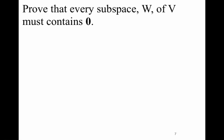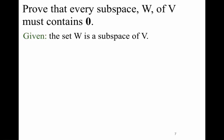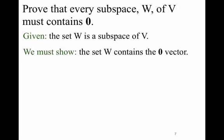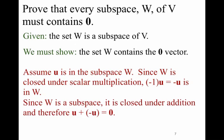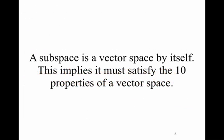We could prove that every subspace W of V must contain the zero vector. We're given that W is a subspace of V — a non-empty subset closed under addition and closed under scalar multiplication. We must show that W contains a zero vector. Assume U is in the subspace W. Since W is closed under scalar multiplication, minus 1 times U equals minus U is in W as well. Since W is also closed under addition, U plus minus U — one of our axioms — equals the zero vector. Therefore, if it's closed under addition and closed under scalar multiplication, the zero vector has to be there.